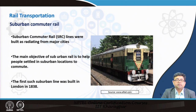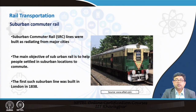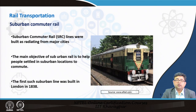Suburban rails have been there for a long period of time in India, primarily in all four large metropolitan cities and now coming up in a couple more. The main objective of suburban rail is to help people settle in suburban locations. As cities started expanding and people started living further away, it was envisioned that there should be specific rail systems for everyday commuters, connecting suburban areas to the city.